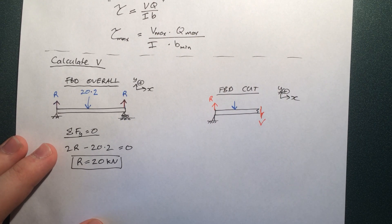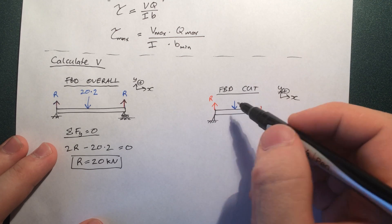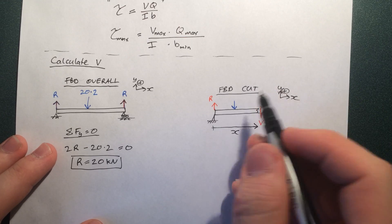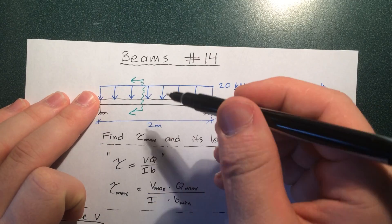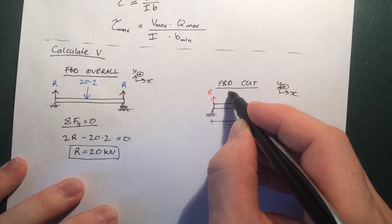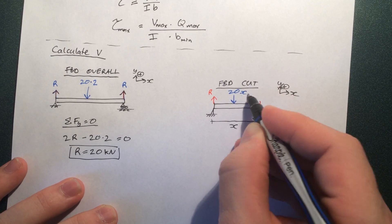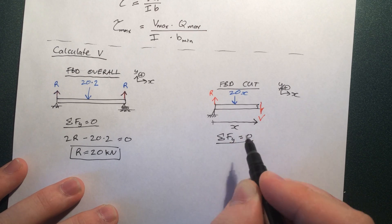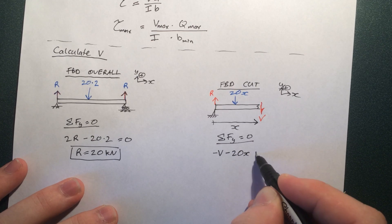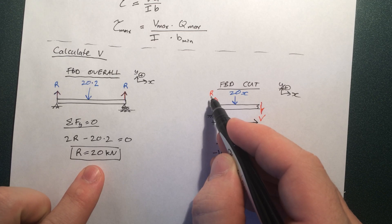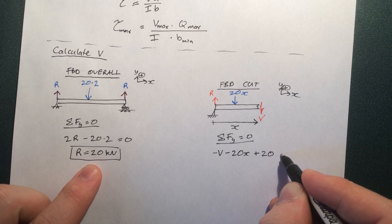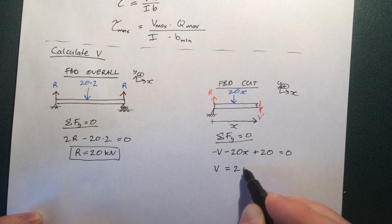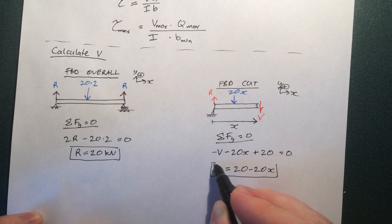Now moving on to this piece here, we're going to go through the same thing. What is the magnitude of this force? Well, we've made a cut at a distance x away from the base. So, the magnitude of the force here is simply going to be 20 kilonewtons per meter times that amount of distance x. So, this here is going to be 20x. Then we can say V equals 20 minus 20x.